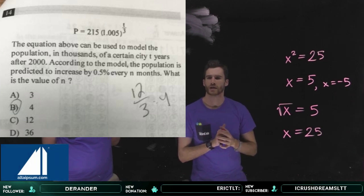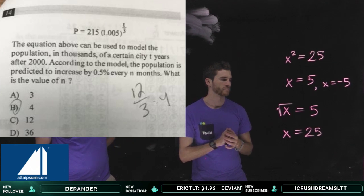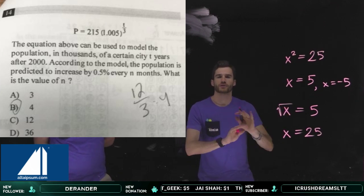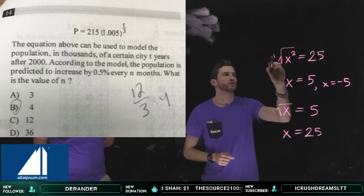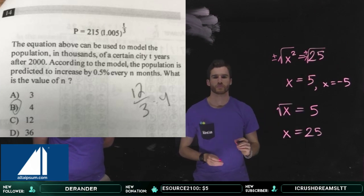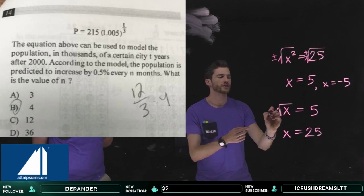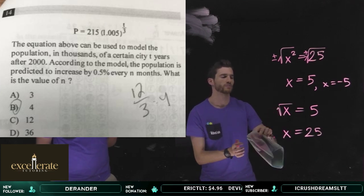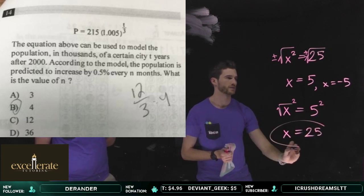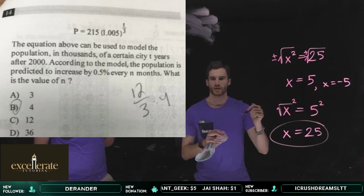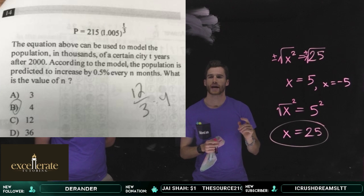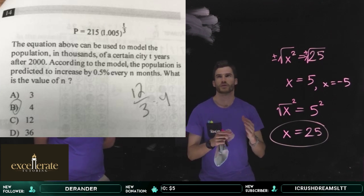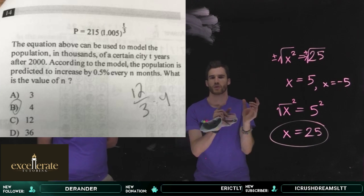Three years times 12 months per year equals 36 months. So n equals 36, and the answer is D. A quick aside on square roots: when you have x squared and take the square root yourself, you must write plus or minus. But when a radical symbol is already given in a problem, it's implied positive. When a question asks for a possible answer, radical 7 and negative radical 7 are both valid — they would not appear together unless as part of the same answer choice.